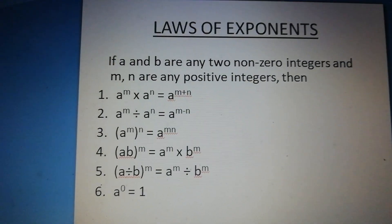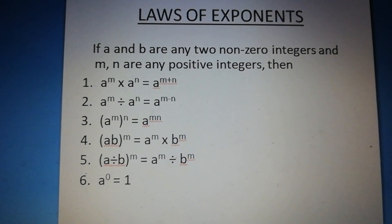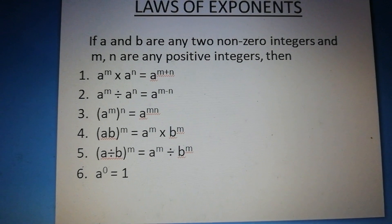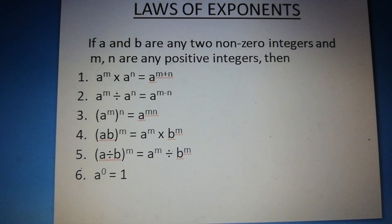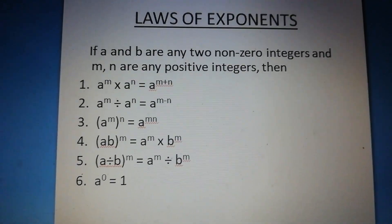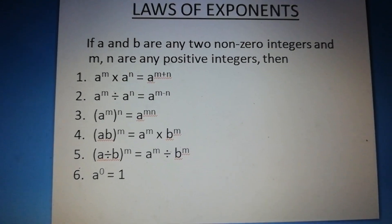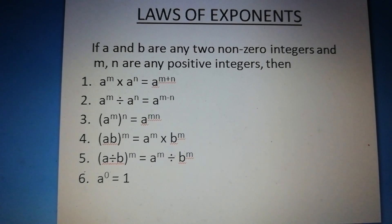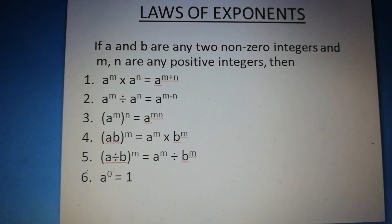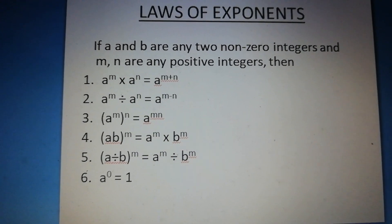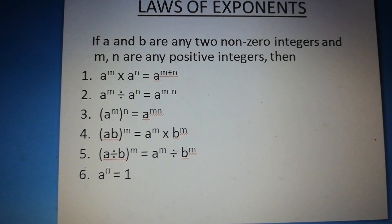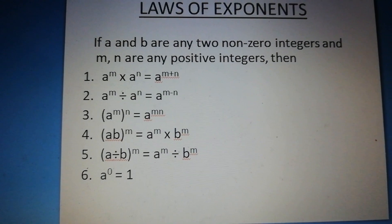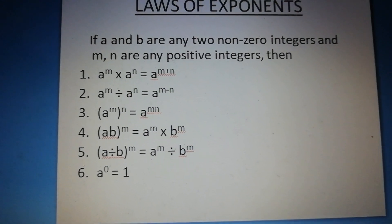It states that if a and b are any two non-zero integers and m and n are any positive integers, then: Number 1 — a to the power m into a to the power n is equal to a to the power m plus n. Number 2 — a to the power m divided by a to the power n is equal to a to the power m minus n.